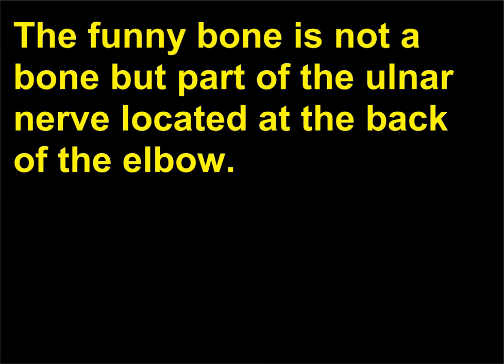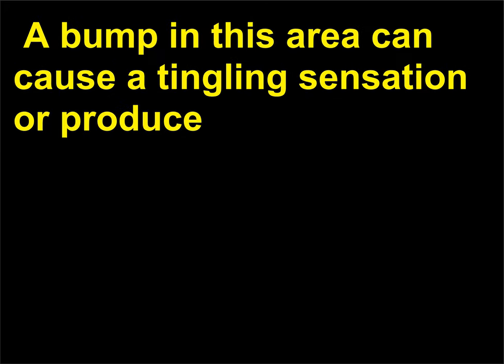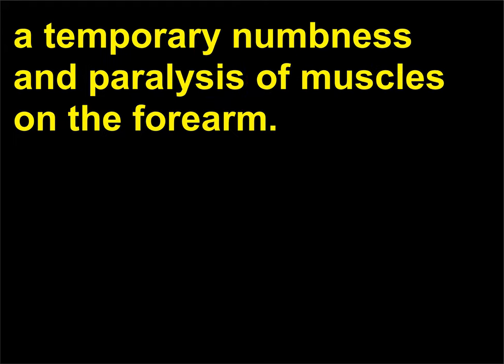What is the funny bone? The funny bone is not a bone but part of the ulnar nerve located at the back of the elbow. A bump in this area can cause a tingling sensation or produce a temporary numbness and paralysis of muscles on the forearm.